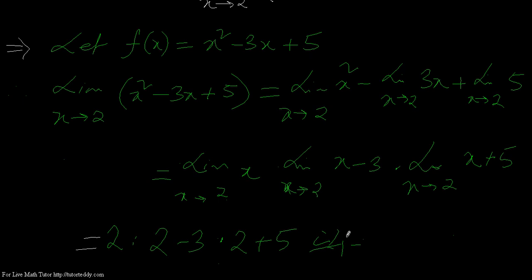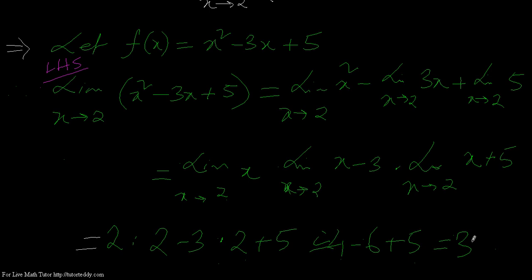So I have a multiplication sign between 2 and 2, giving 2 times 2 equals 4. Then minus 3 times 2 equals 6, plus 5. So I get 4 minus 6 plus 5, which equals 3. This was my left hand side, and the right hand side is 3. So LHS equals RHS.